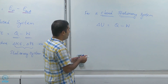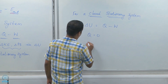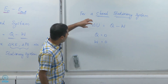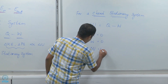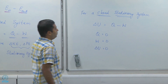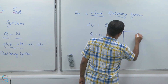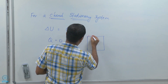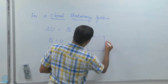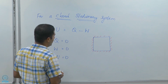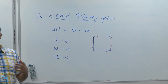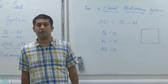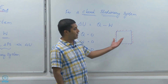For example, let us say Q is zero and W is zero. Then we have zero on the right-hand side, which means delta U equals zero. This means that if I have an isolated system — a closed system that also does not have any heat or work interactions with the surroundings — I cannot have any change in internal energy.